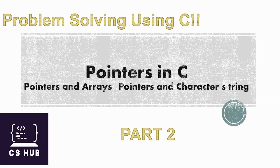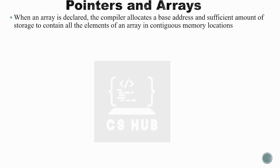Let's start with pointers and arrays. When an array is declared — a pointer variable holds the address of another variable, it points to somewhere, and the content of the pointer will be the address of another variable. If we use a single variable, we need a single variable to hold a single value.